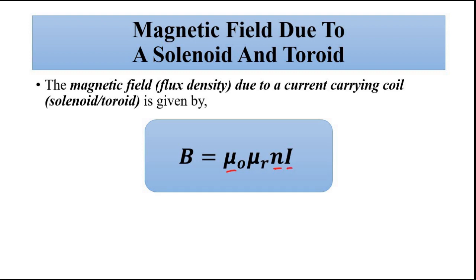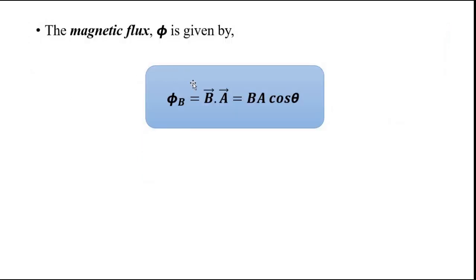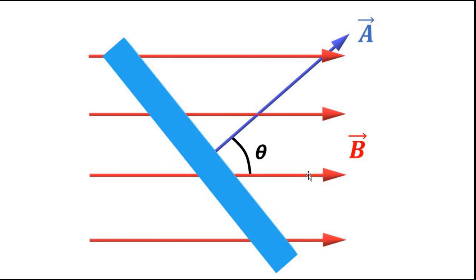Here, absolute permeability is constant, number of turns of wire is constant, and constant current is supplied so that is also constant. Therefore, the magnetic flux density is dependent on the relative permeability, which changes as per the Villari effect when subjected to external force or pressure. Magnetic flux is given by the dot product of magnetic flux density and the area vector, equal to B·A·cos θ, where θ is the angle between the area vector and the magnetic field vector.